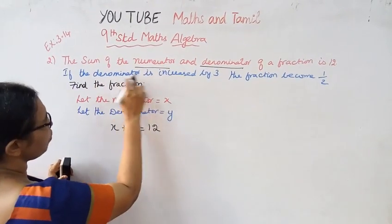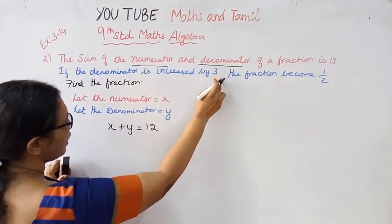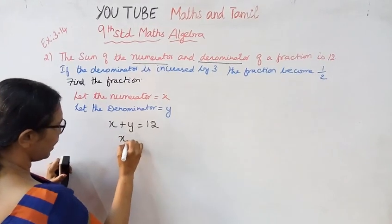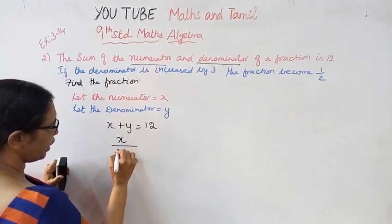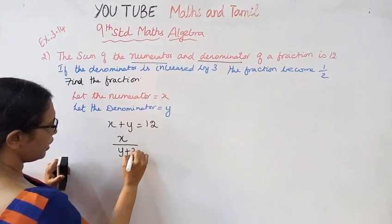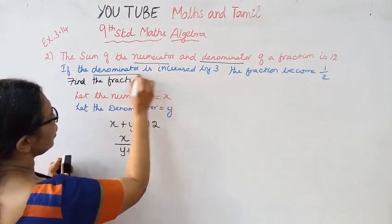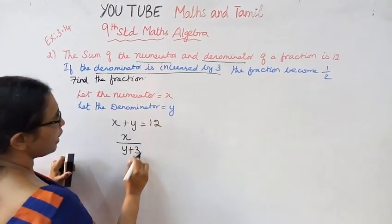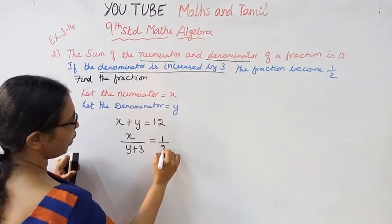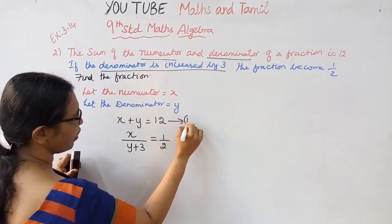Now, the denominator is increased by 3. Numerator stays the same. Denominator becomes y plus 3. The fraction becomes 1 by 2. This is the first equation.